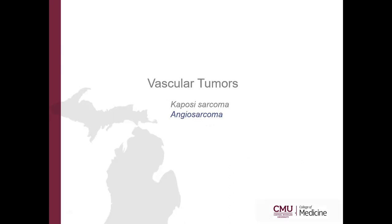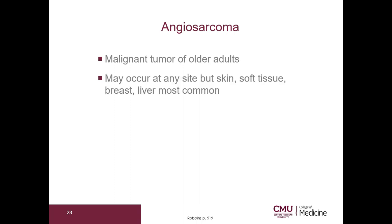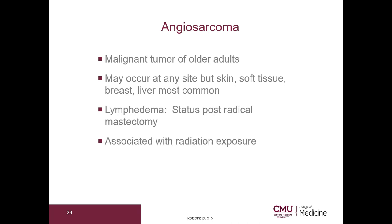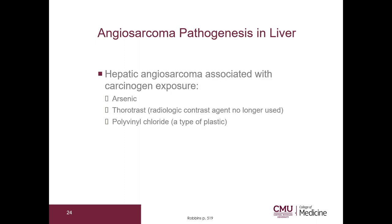Let's go on to angiosarcoma. This is a malignant tumor of older adults. It can occur at any site, but the skin, soft tissue, breast, and liver are most common. Lymphedema can also predispose to angiosarcoma — for example, patients who are status post radical mastectomy with extensive lymphedema of the upper limb. This is also associated with radiation exposure. It has a 30% five-year survival. In the liver, angiosarcoma is due to carcinogen exposure, including arsenic, thorotrast (a radiologic contrast agent no longer used), and polyvinyl chloride, which is a type of plastic.